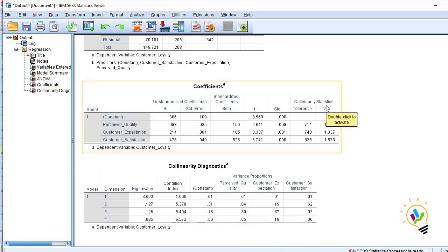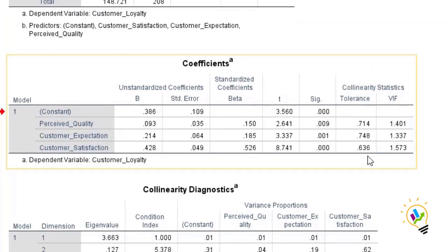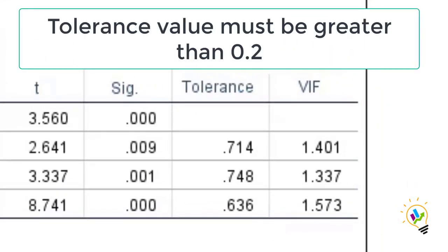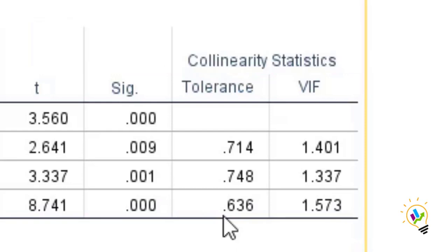In the Coefficients table under Collinearity Statistics, we have tolerance values for the three independent variables. Tolerance for perceived quality is 0.714, for customer expectation is 0.748, and for customer satisfaction is 0.636. If the tolerance is greater than 0.2, there is no multicollinearity problem. Since all values are greater than 0.2, the first condition confirms there is no multicollinearity problem between the independent variables.